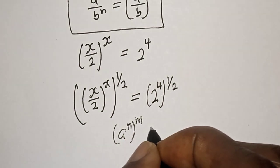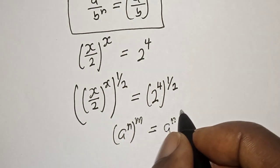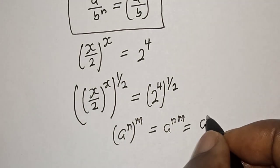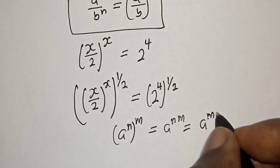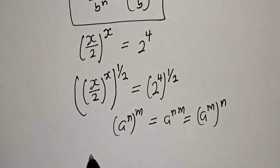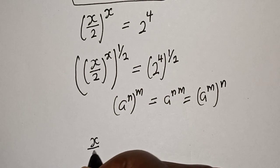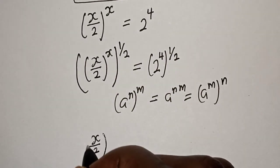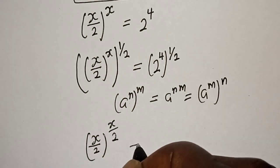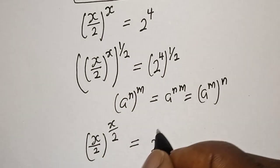Take note of this rule: a raised to power m, to the power of n, is equal to a raised to power m times n. Applying this, we get s over 2 to the power of s over 2 is equal to 2 raised to power 4 times 1 over 2, which is 2 raised to power 2.